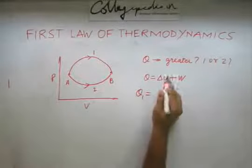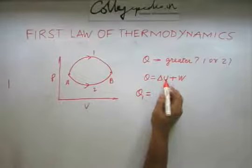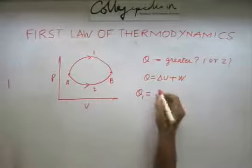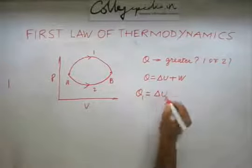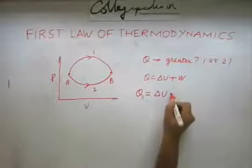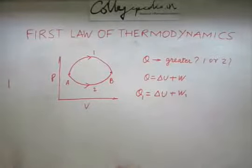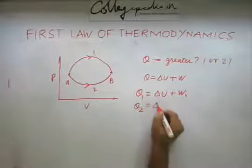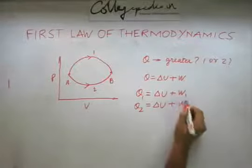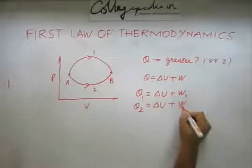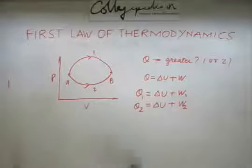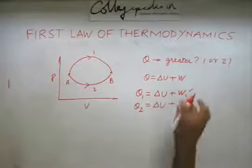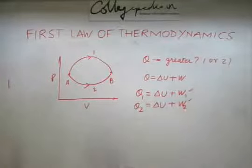So to find out Q for the first process, I need to find out what is the delta U for the process. Because the gas is taken from state A to state B, which is same for both processes, let me denote this simply as delta U. The work done in this process is W1. In the second process, the internal energy change is going to remain the same and the work done is going to be W2. Now in this problem, the deciding factors are W1 and W2. So once you know W1 and W2, you can easily tell Q1 is greater or Q2 is greater.